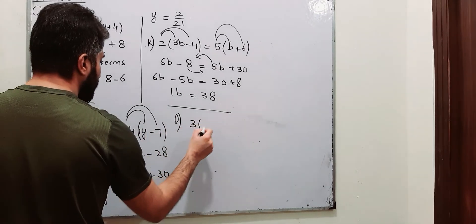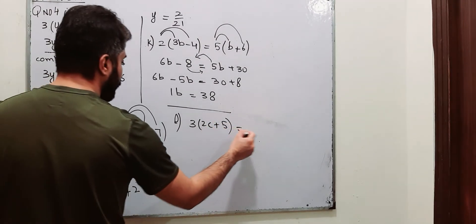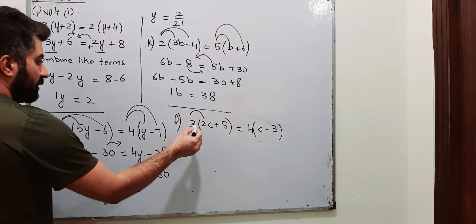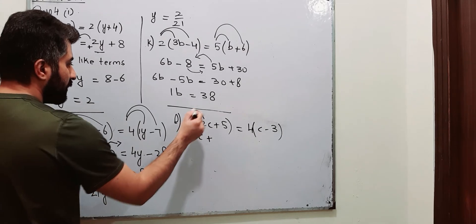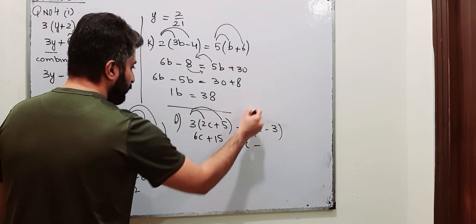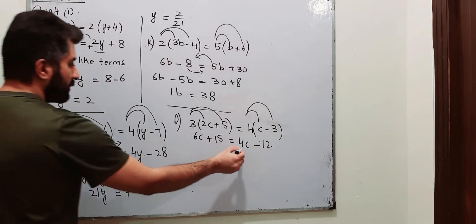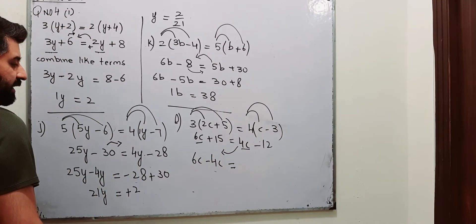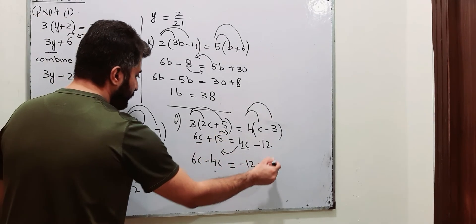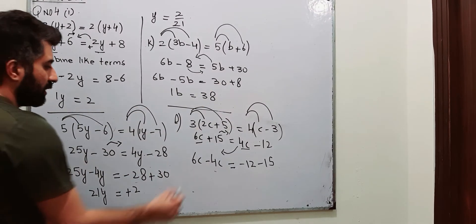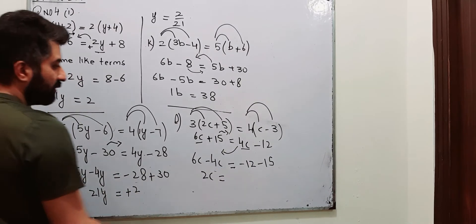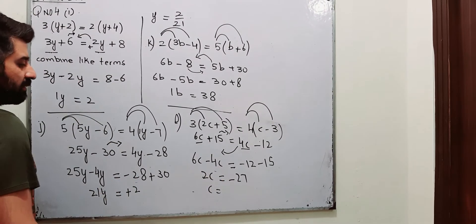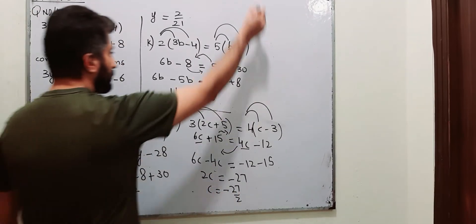Part number l: 3 into 2c plus 5 is equal to 4c minus 3. Multiply the number outside by all the terms inside — that is opening the brackets. 3 into 2c is 6c, 3 into 5 is 15. 4 into c is 4c, 4 into 3 is 12. Now combine the like terms. The terms involving c: 6c minus 4c. The 4c is moved to the left side — change the sign. Move this 15 to the right side — it will be minus 12 minus 15. 6c minus 4c is 2c. Minus 12 minus 15 is minus 27. Move this 2 to the other side — it is being multiplied by c, so it will divide. So this is your answer for part number l.